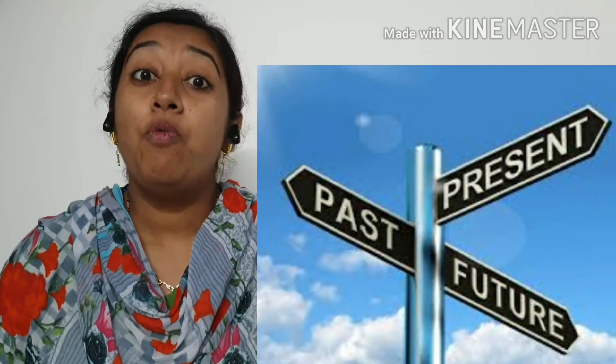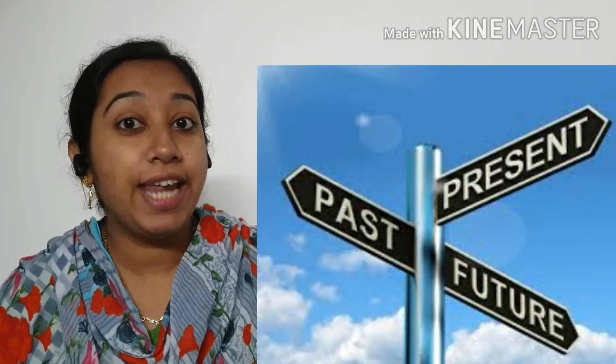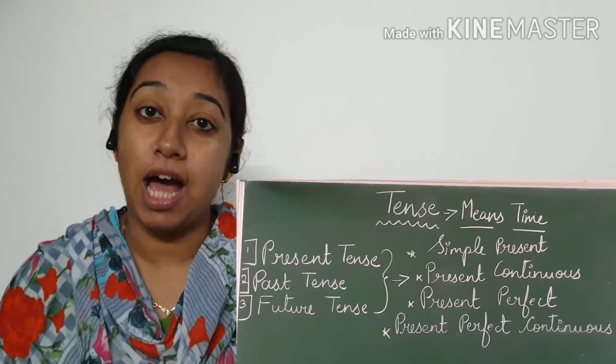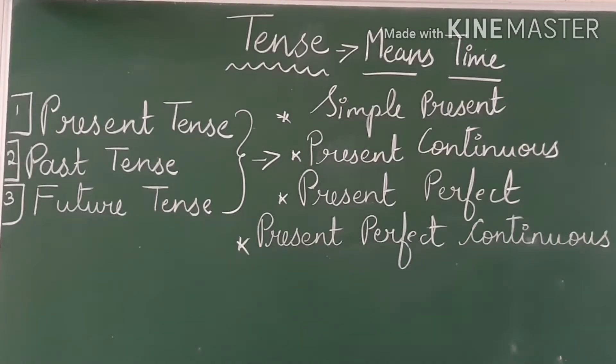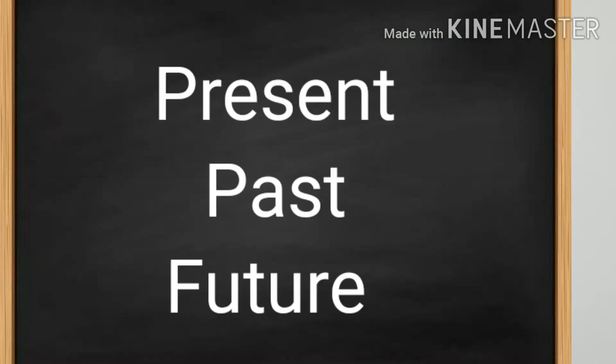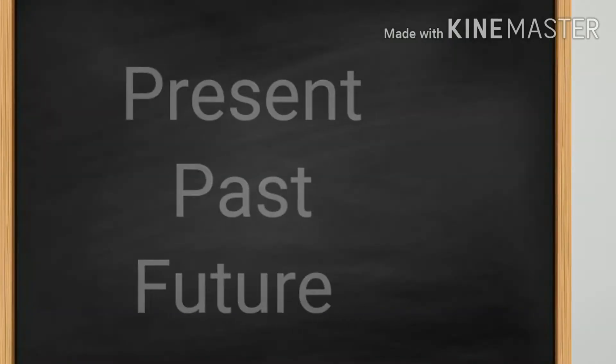Hello children, welcome back! Today we are going to learn a new grammar topic on tenses. What do you mean by tense? Tense means time. Hence, the tense of the verb shows the time of an action indicated by the verb. There are three tenses: present tense, past tense, and future tense.